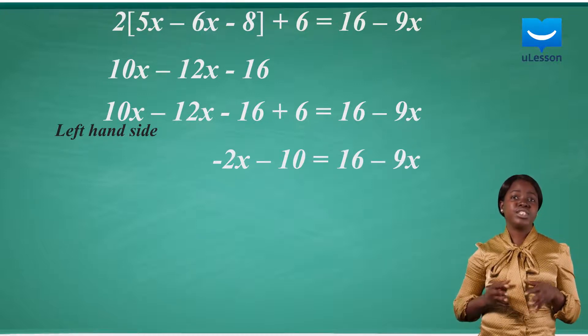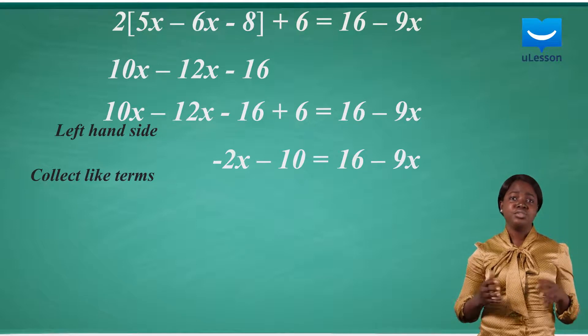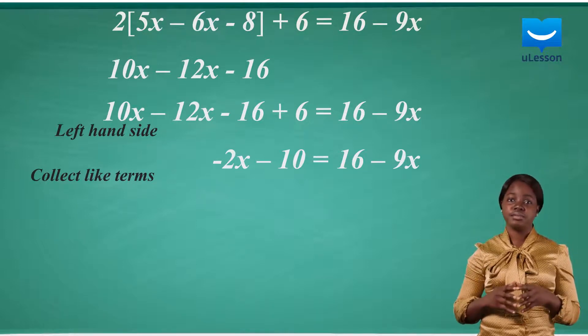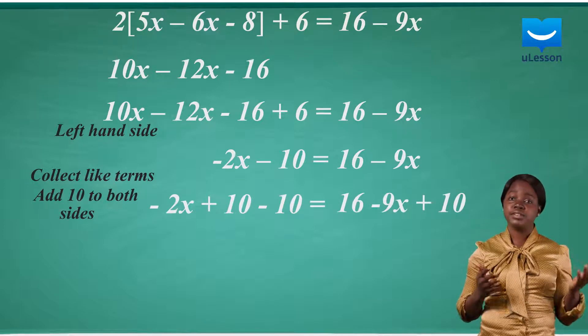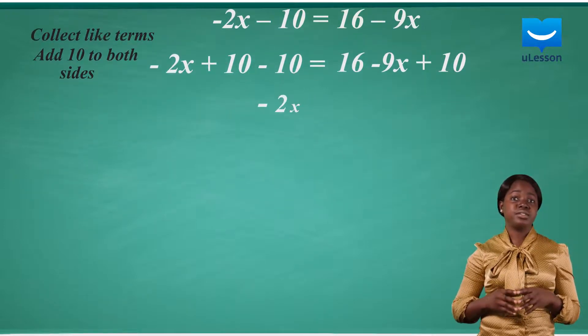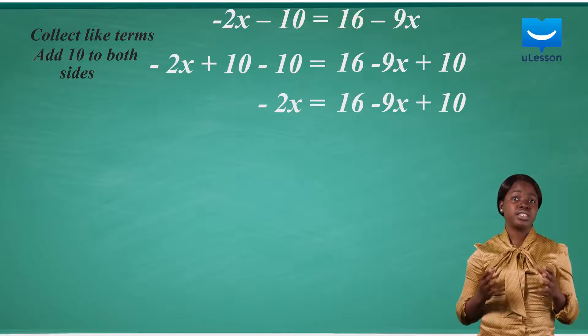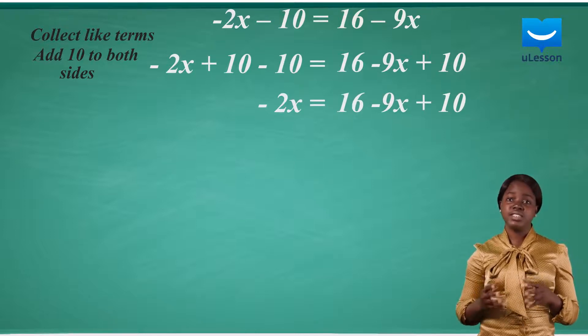Then we move on to bring all the like terms to one side of the equality sign. So we add 10 to both sides to eliminate minus 10 on the left hand side. This gives minus 2x equals 16 minus 9x plus 10.